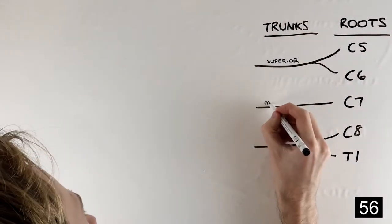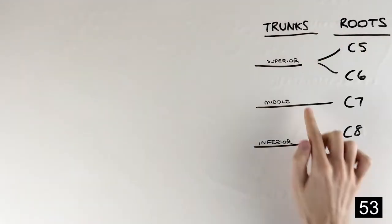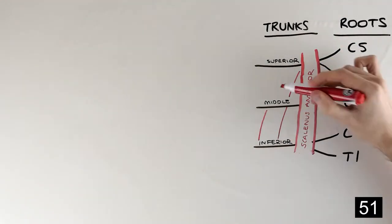We'll begin with the C5 to T1 nerve roots emerging from the spinal cord, which combine to form three trunks with the C7 root continuing alone. These trunks emerge between the anterior and middle scalene muscles of the neck.